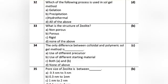Question 8: Which of the following processes is used in the sol-gel method? Option A: gelation. Option B: precipitation. Option C: hydrothermal. Option D: all of the above. The correct answer is Option D: all of the above.